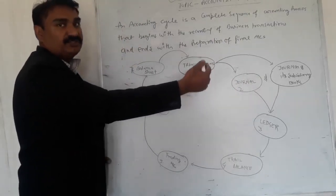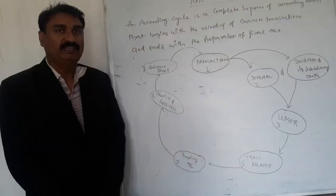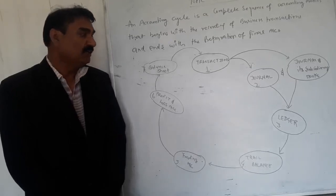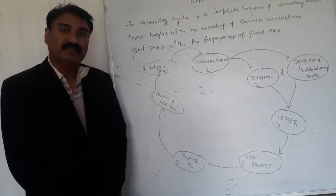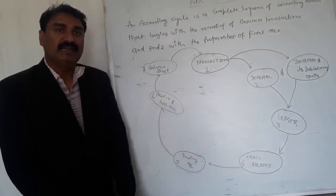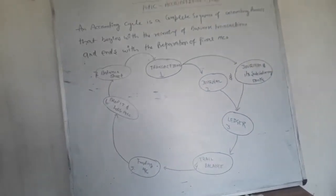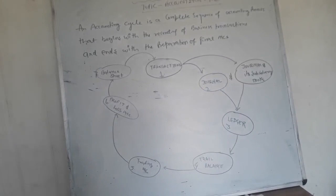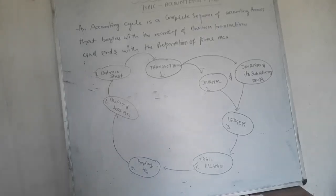We move to the ledger, and this is the third step. Ledger is known as the books of accounts. The transactions move further to ledger where the accounts are written up. Here combined effect of debit and credit pertaining to each account is arrived at in the form of balances.